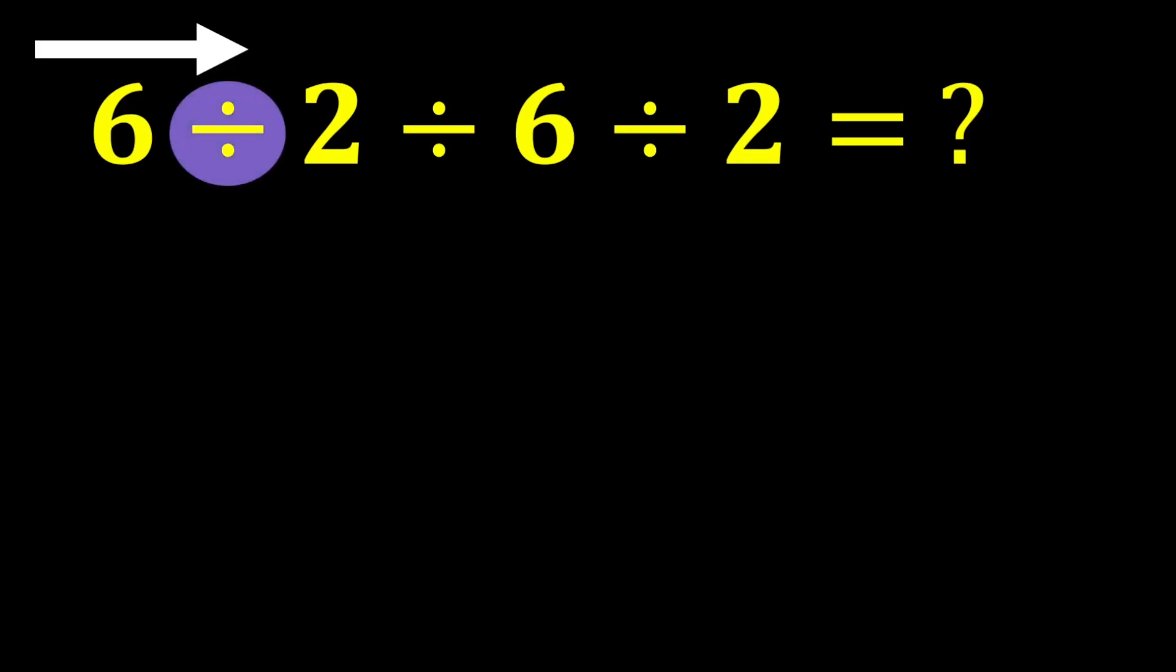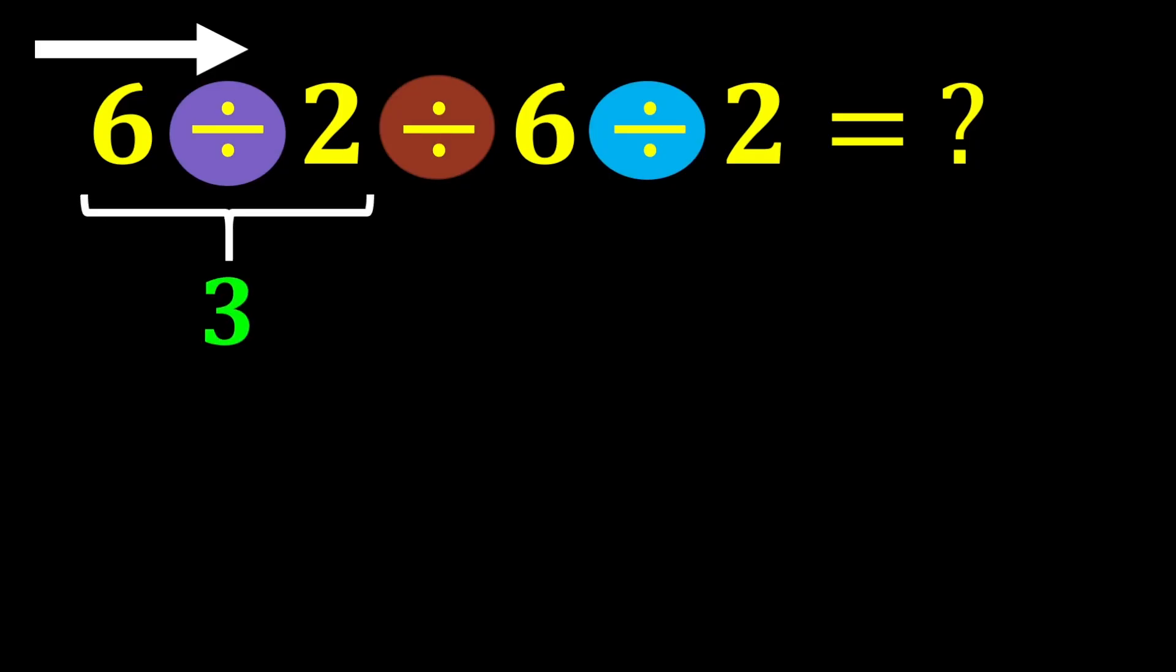Therefore, we first perform this division, then this one, and finally the last division. 6 divided by 2 gives us 3, and the expression becomes 3 divided by 6 divided by 2.